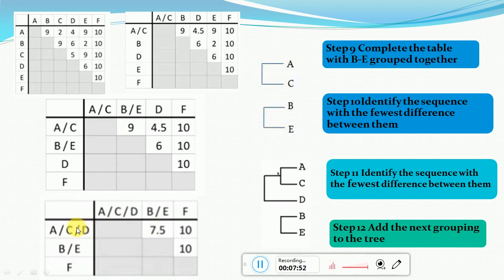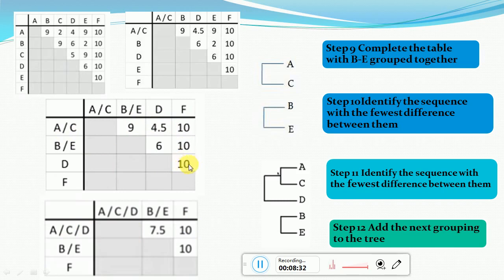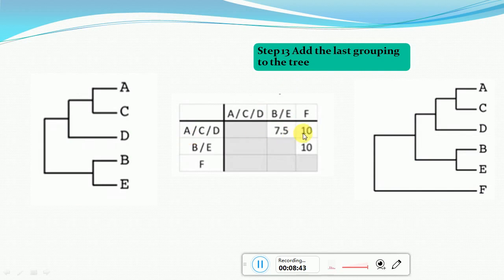With ACD as a single entity, we fill the new matrix values. For ACD-BE: AC-BE is 9 and D-BE is 6, so (9+6)/2 = 7.5. For ACD-F: AC-F is 10 and D-F is 10, giving an average of 10. The BE value remains the same. The smallest value in this matrix is 7.5.